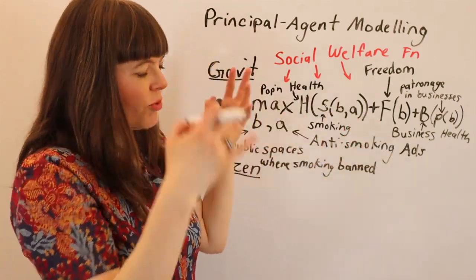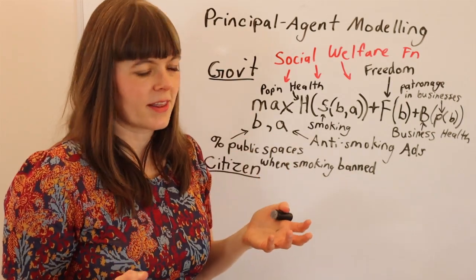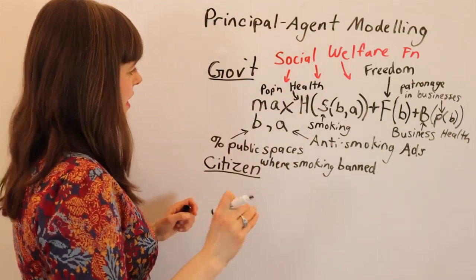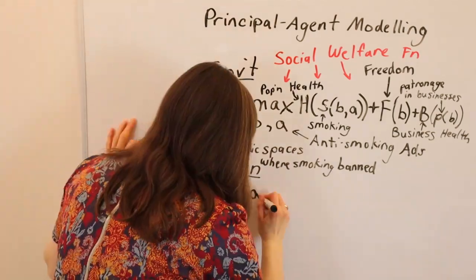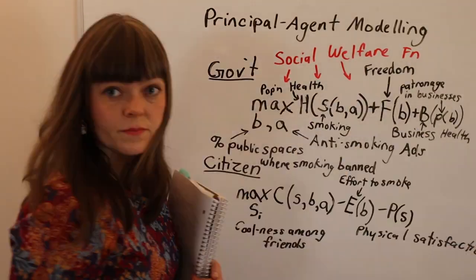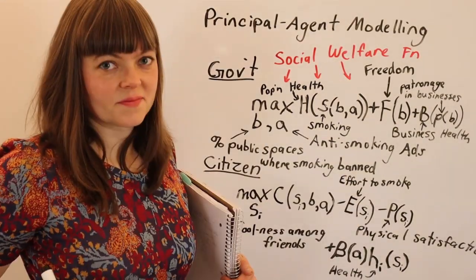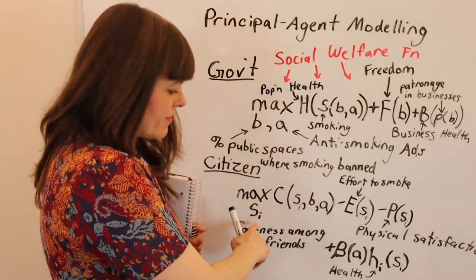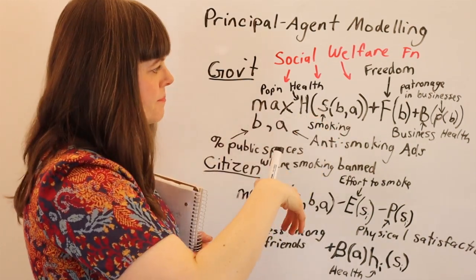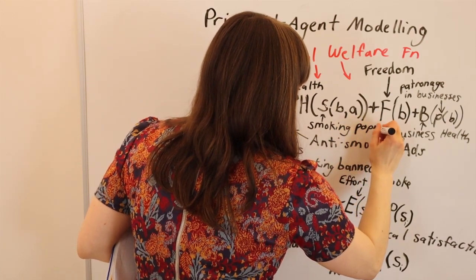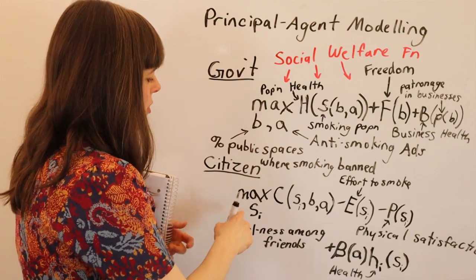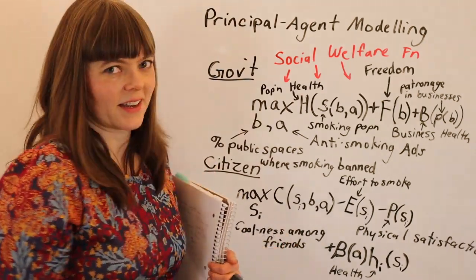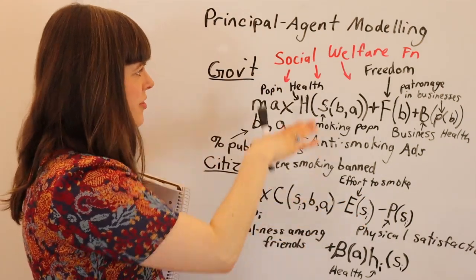Part of modeling is you put down a model, read it, think about it, and figure out where you went wrong and what you need to adjust. I've just found a mistake, which makes it fun because I have to fix it. Let's continue with principal-agent modeling. Here we have the citizen's optimization problem — the citizen is deciding how much they smoke, S sub i. Smoking in the population is the summation of every individual's S sub i. We can build variance in the population into this model.